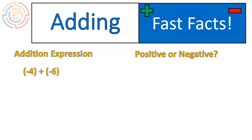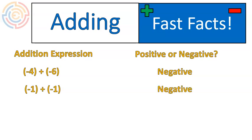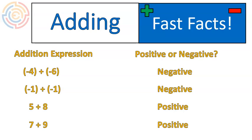Negative four plus negative six — negative. A negative plus a negative gives you a negative. Negative one plus negative one — negative. A negative plus a negative gives us a negative. How about five plus eight? That's going to give us a positive — a positive five plus a positive eight gives us a positive. Seven plus nine — positive plus positive gives us a positive. So when the signs are the same: negative plus negative gives a negative result, and positive plus positive gives a positive result.